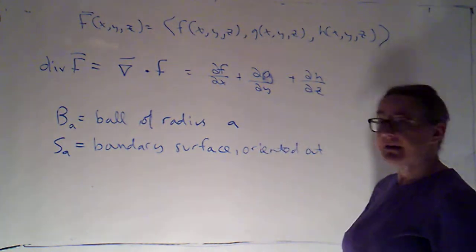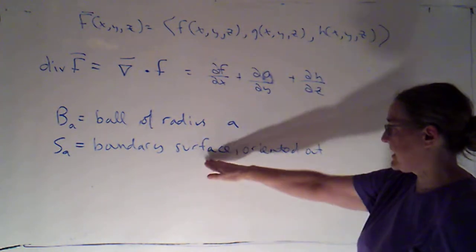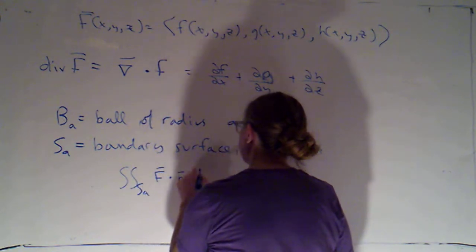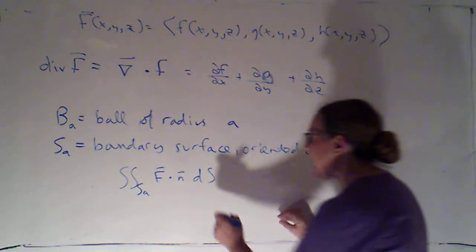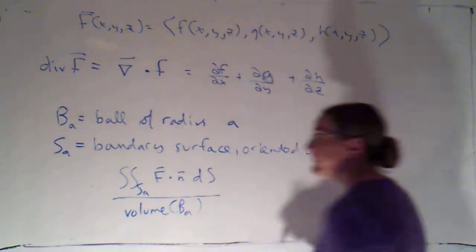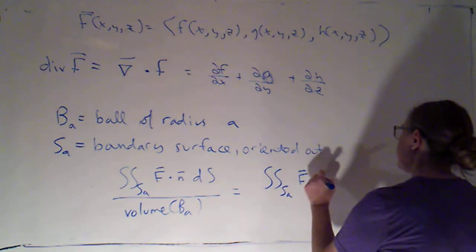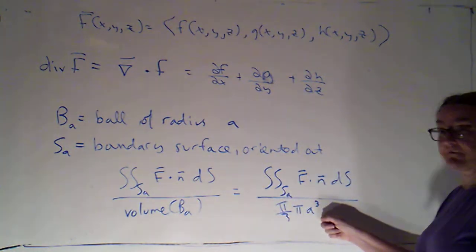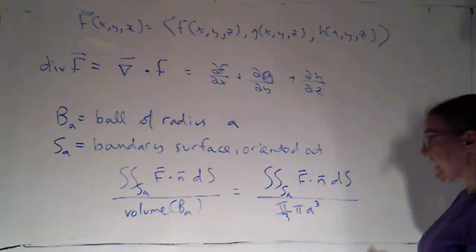And I could then calculate, if I wanted to calculate the flux of F across S sub A, I could do that by saying it's the double integral along S sub A of F dotted with N dS. If I wanted to calculate the flux density, I would divide that by the volume of the enclosed solid, which would be the volume of that ball. This would be the double integral along S sub A of F dotted with N dS divided by four-thirds pi times A cubed, because that's the formula for the volume of a sphere. This would be the flux density over a sphere of radius A.